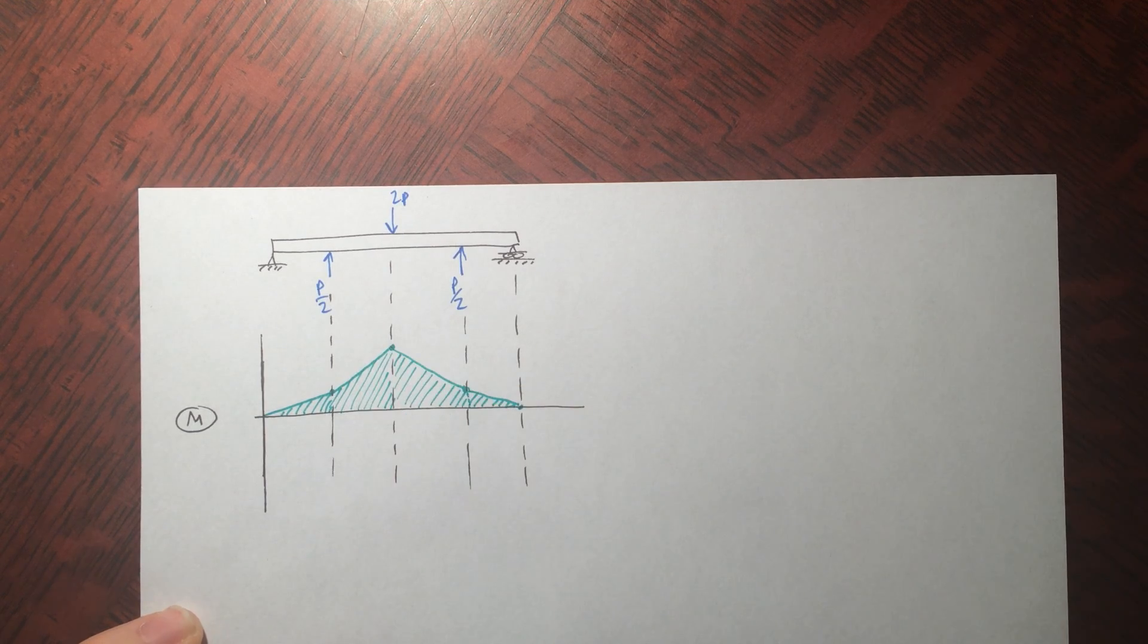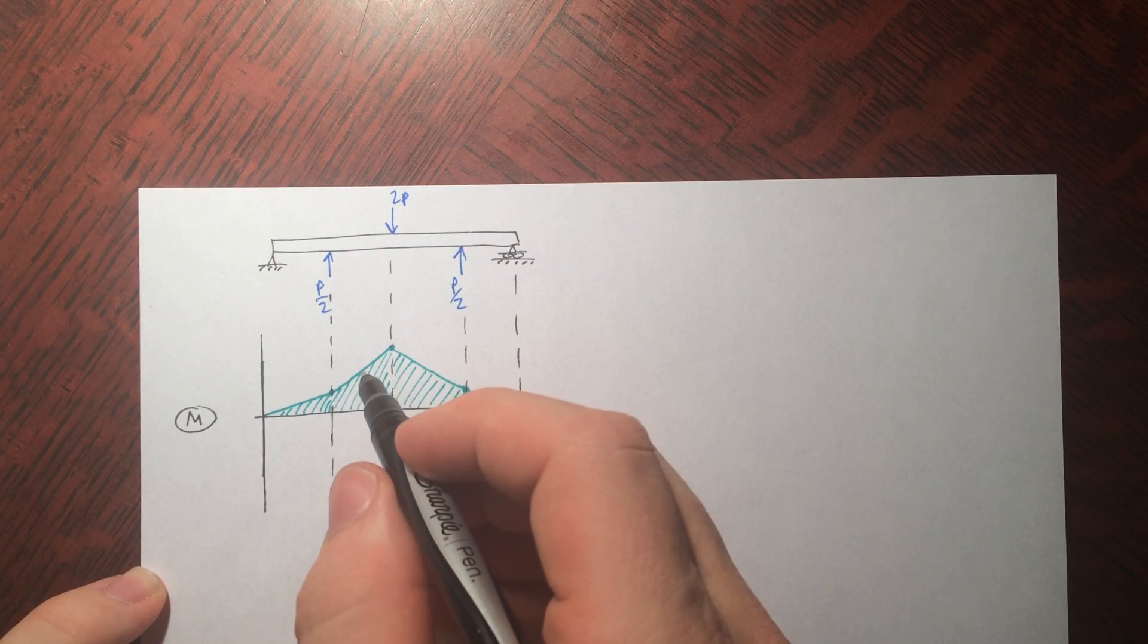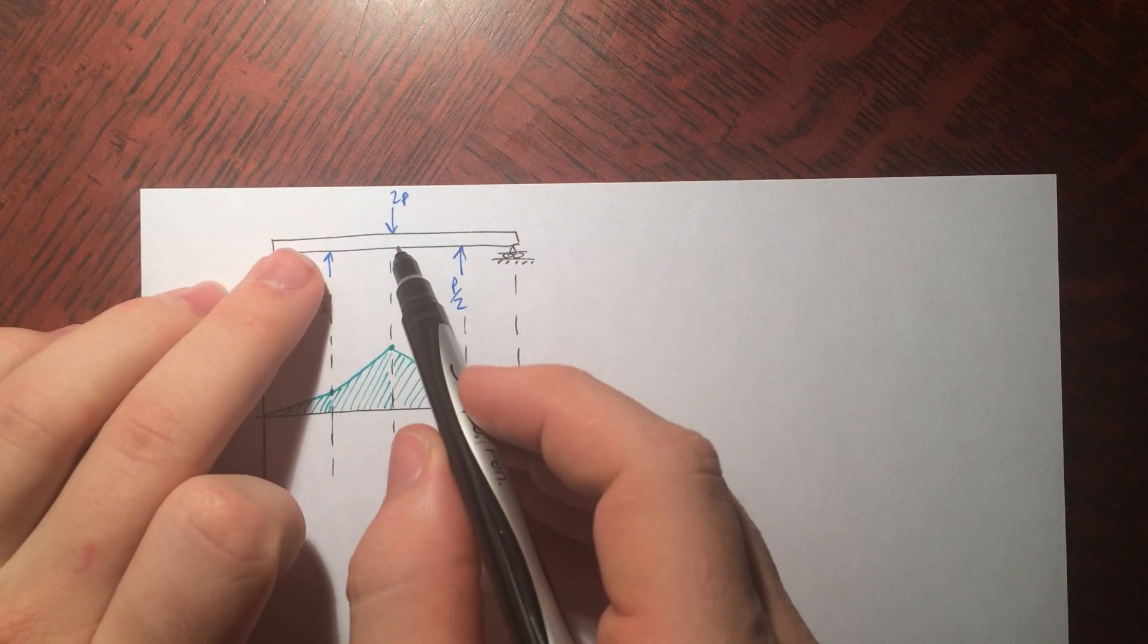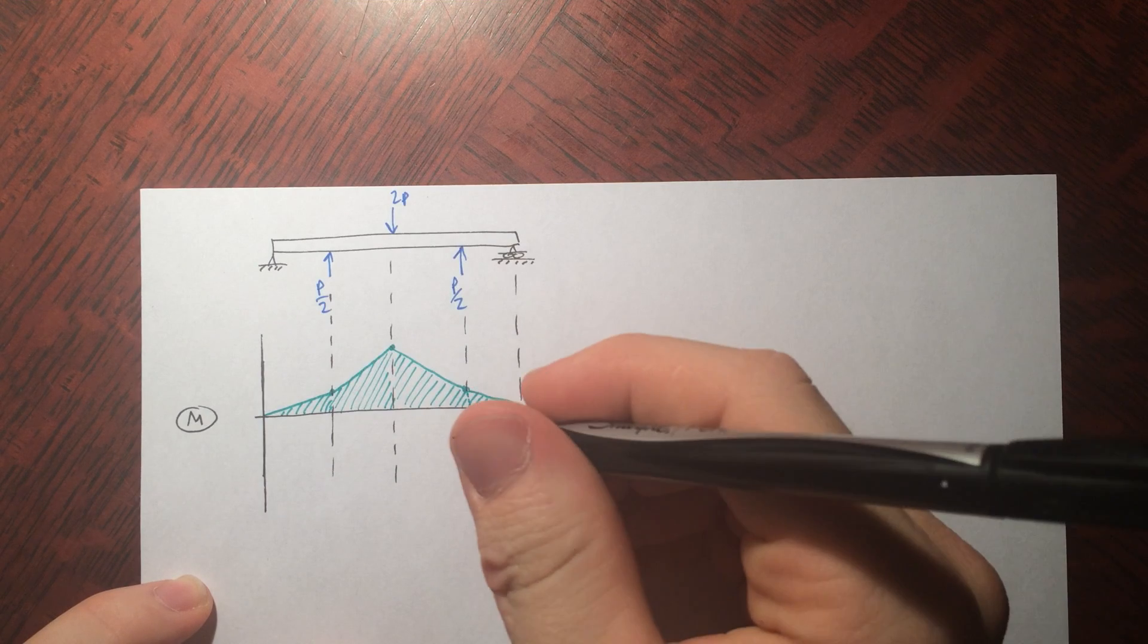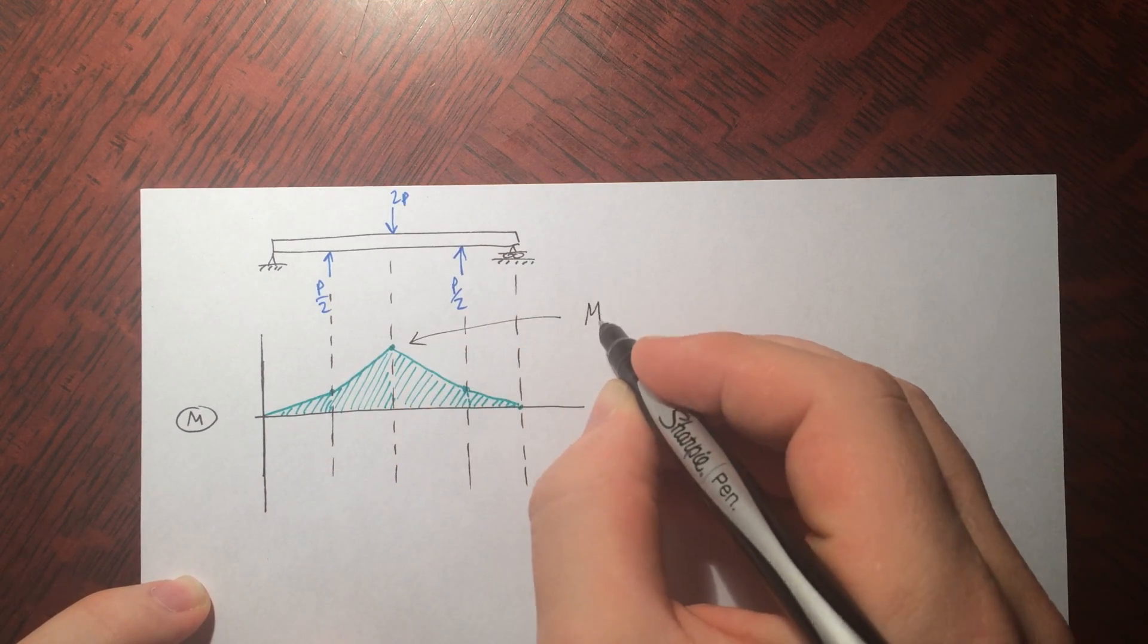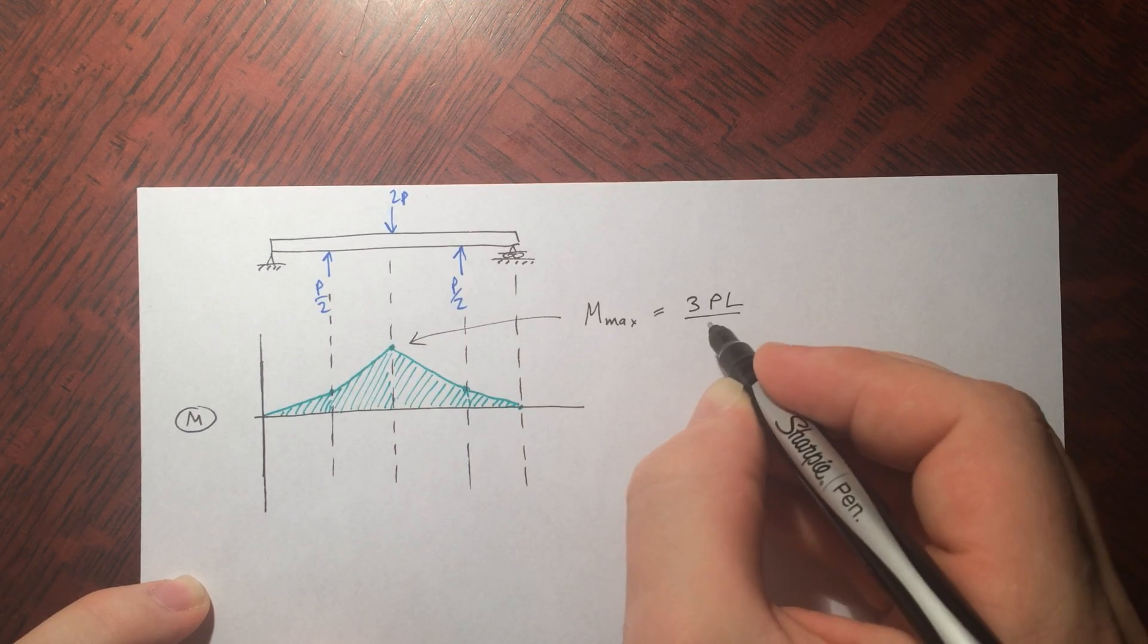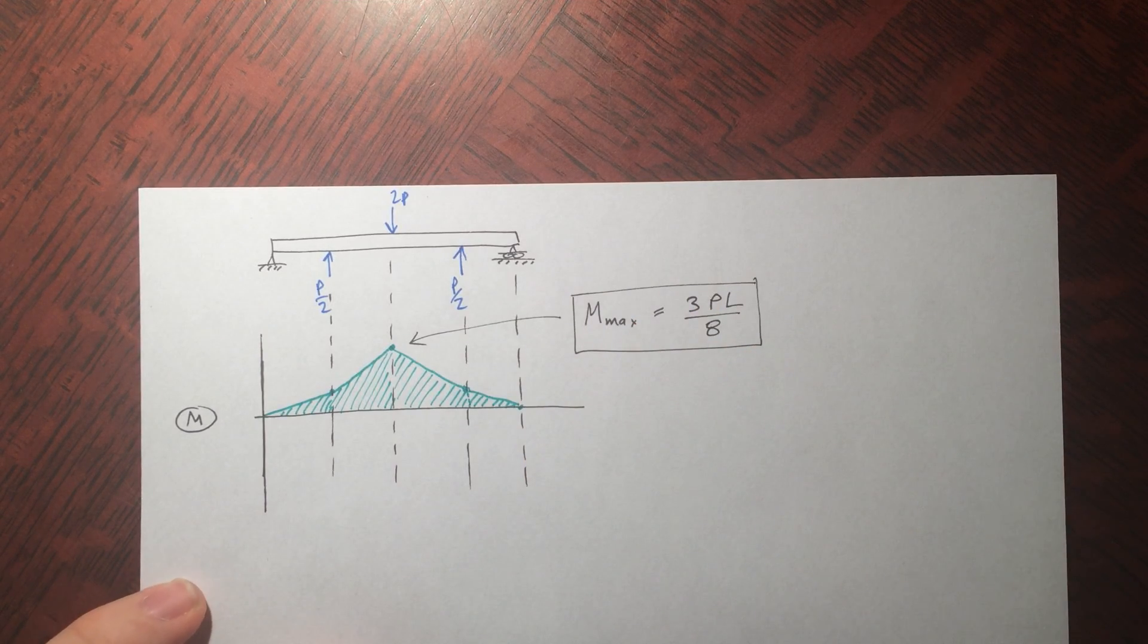So our maximum, because that's what we're after to find our maximum stress. If you evaluate m2 at a distance x equals l by 4, this distance here, you get that the maximum bending moment at the top is 3PL over 8, and there's the first piece of the puzzle we need to solve in our sigma.